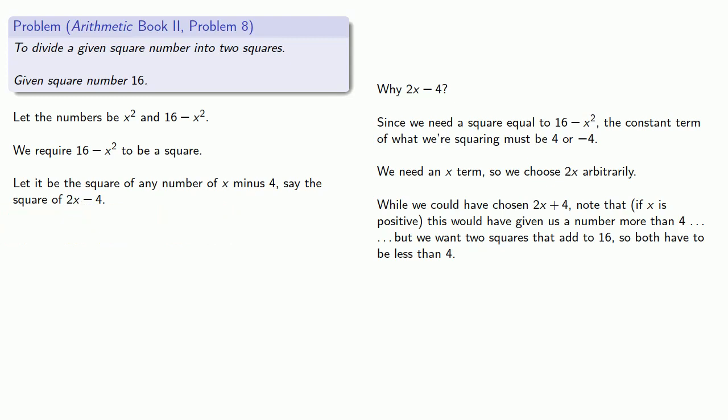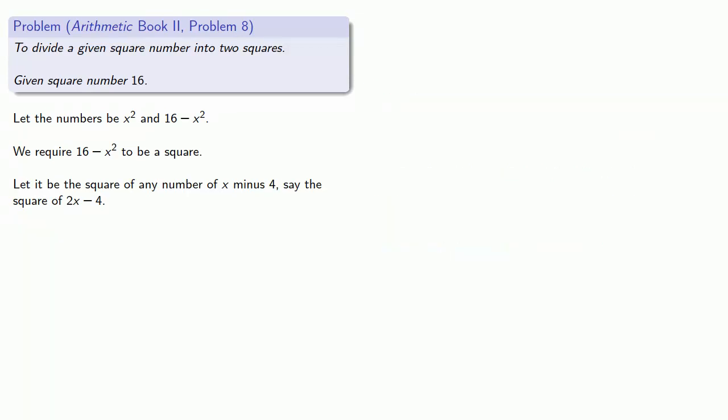Now, Diophantus doesn't use negative numbers, but we do. And it turns out it doesn't make a difference for us, as long as we're willing to handle negative numbers and negative solutions. Still, to remain true to the spirit of Diophantus, we should always make sure that in the end, our actual solutions are non-negative rational numbers. Continuing, we want 16 minus x squared to be the square of 2x minus 4. So we can expand and solve, and that gets us our value for x.